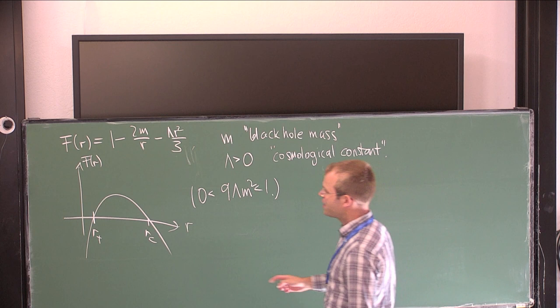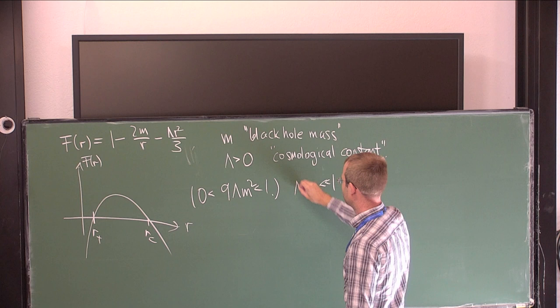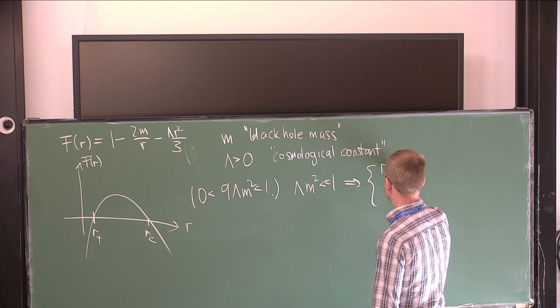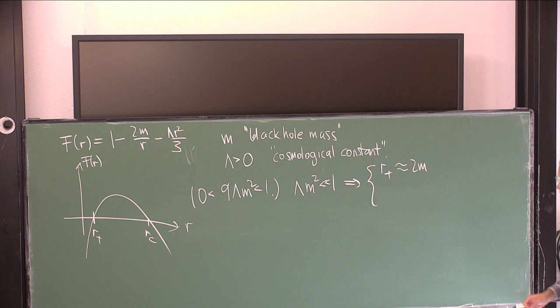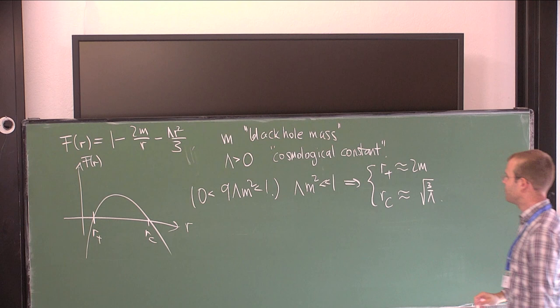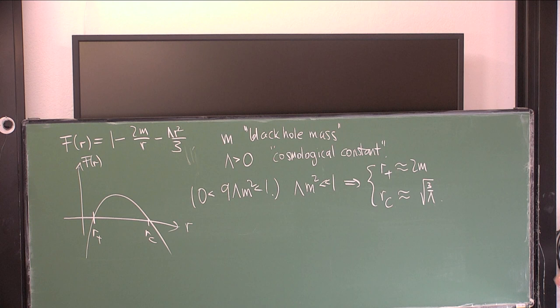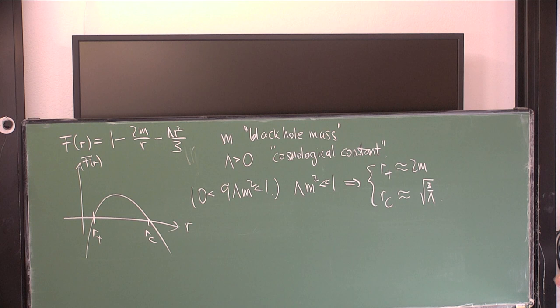R+ and R_C are the so-called event and cosmological horizons of the black hole. When λM² is very small, the event horizon at R+ is well approximated by 2M — the Schwarzschild radius. R_C is roughly equal to √(3/λ). So when the cosmological constant is positive but very small, as in our universe, the cosmological horizon — the boundary of the observable universe — is very, very far away.